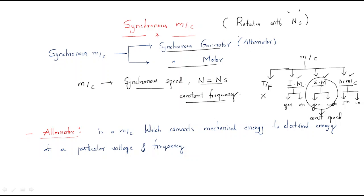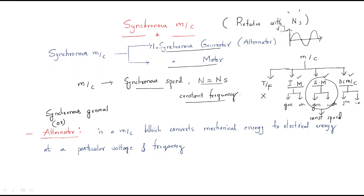The synchronous generator can also be called by another name: the alternator. It is called the alternator because the synchronous generator generates alternating power — the voltage and current are alternating. This makes it an AC machine; wherever frequency is present, that is an AC machine.